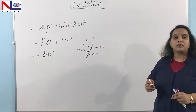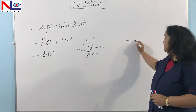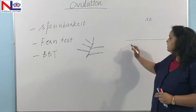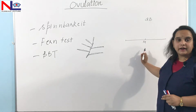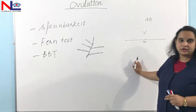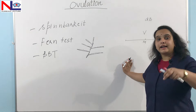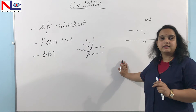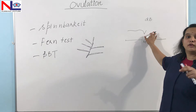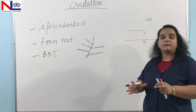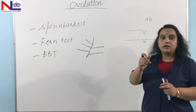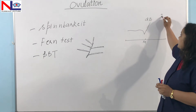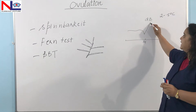If she records her BBT graphically and has a 28-day normal menstrual cycle, on day 14 she will find there is a sudden drop in body temperature, because high estrogen declines the body temperature. Before ovulation — in the pre-ovulatory phase — that is the average body temperature. As soon as she ovulates and the Graafian follicle becomes the corpus luteum, progesterone is released. That progesterone, which is thermogenic, raises the body temperature by about 0.2 to 0.5 degrees centigrade, and that remains constant.